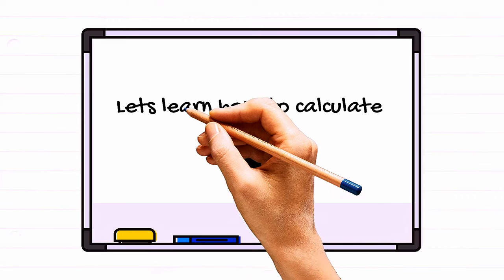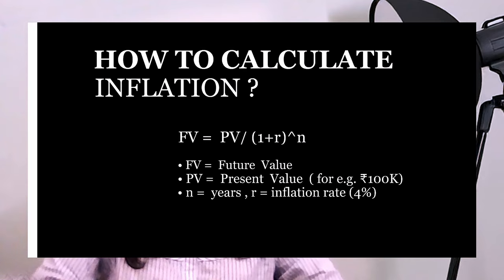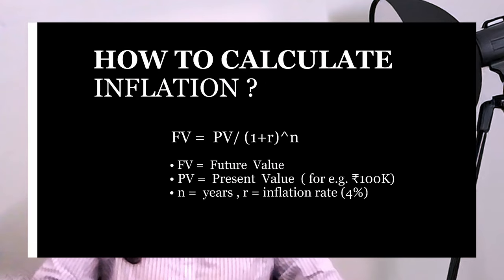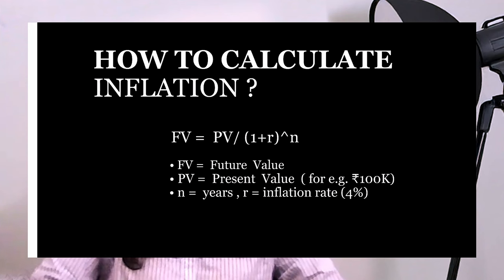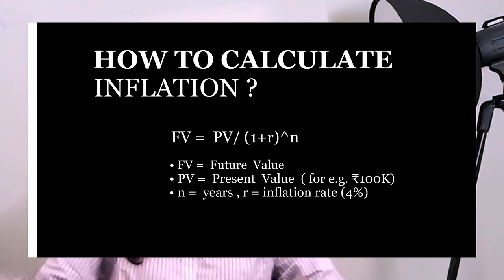Isn't it shocking? But how do we calculate this? There is a simple formula for calculating the future value in terms of inflation adjustment, which you can see on the screen. PV is the present value — let's say 1,000 rupees in this case. The inflation rate is the annual rate, which is 4% or 0.04, and n is the number of years — you can consider 10 or 20. By substituting these values, you can easily evaluate the future impact of inflation on everyday groceries too.